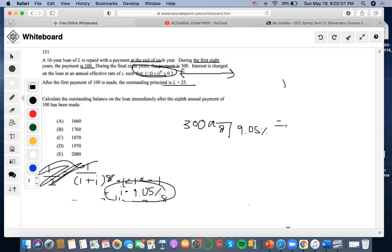With our interest rate of 9.05%, we're going to calculate that the outstanding balance is 300a at 8 years that we haven't paid yet, and we input 9.05% as the interest rate. If we use a financial calculator with payment negative 300, interest rate 9.05%, 8 periods, we'll end up getting 1657.36 as the answer. So we would open and answer C as the final answer.